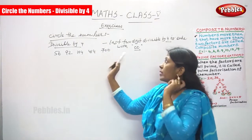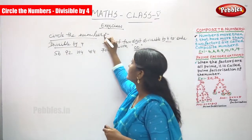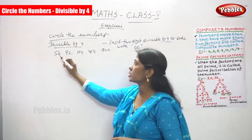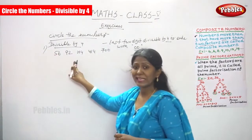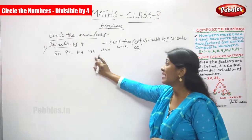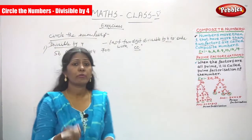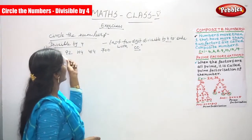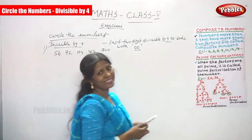Circle the numbers. You can write numbers also. Divisible by 4. The first question lists the numbers: 56, 92, 104, 4114, and 700. We are going to find out which numbers are divisible by 4, and you have to circle them.